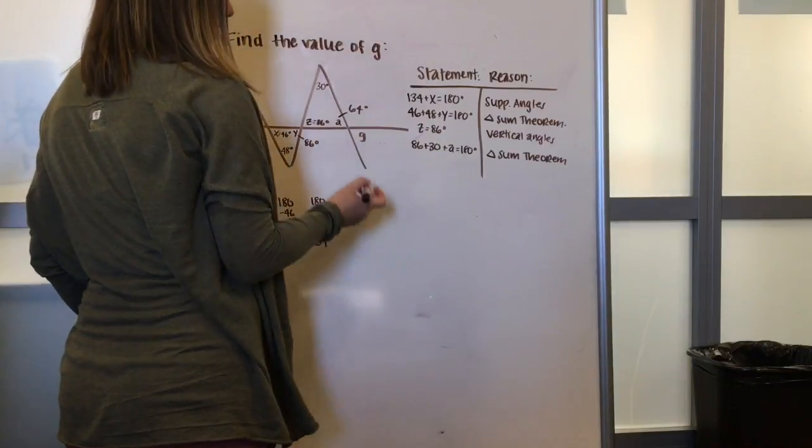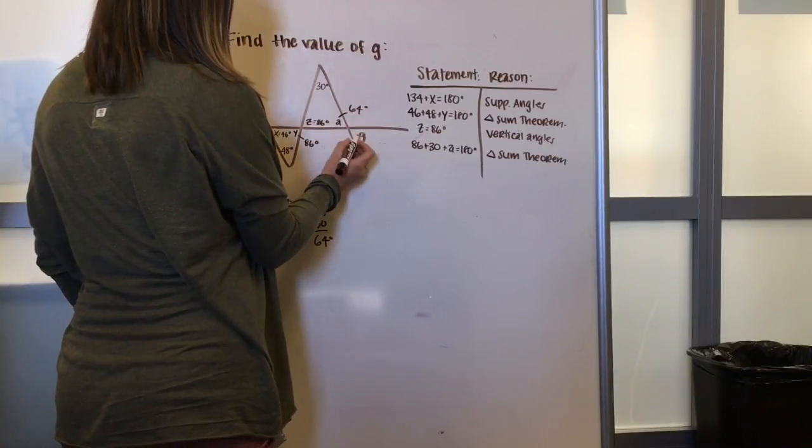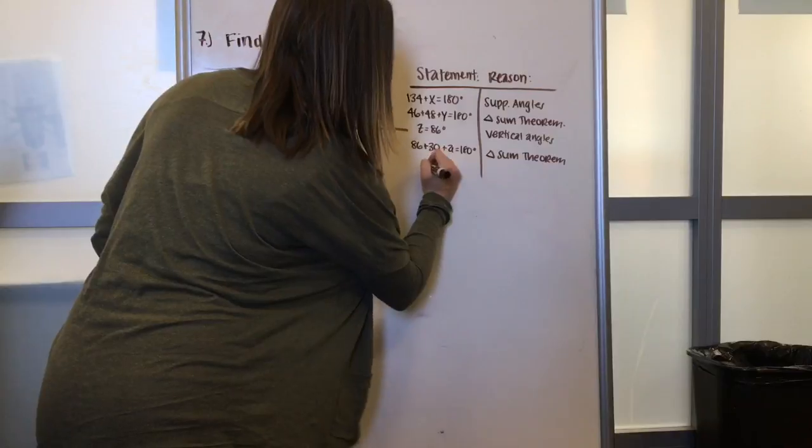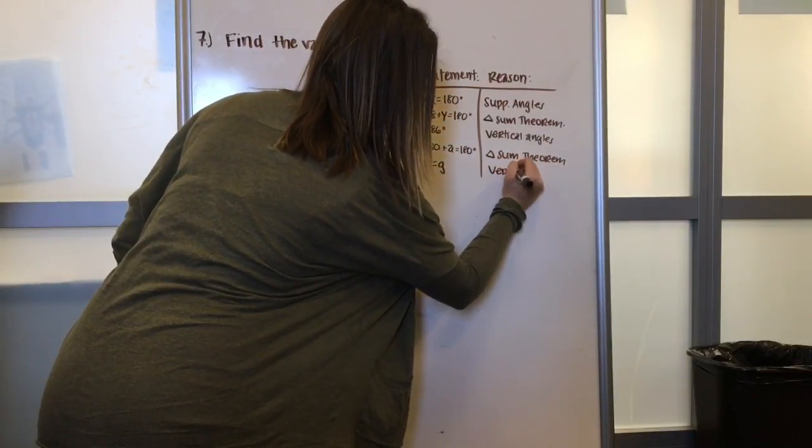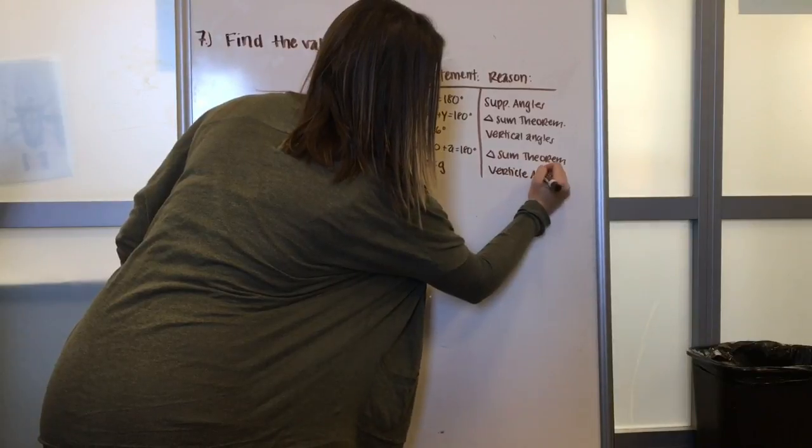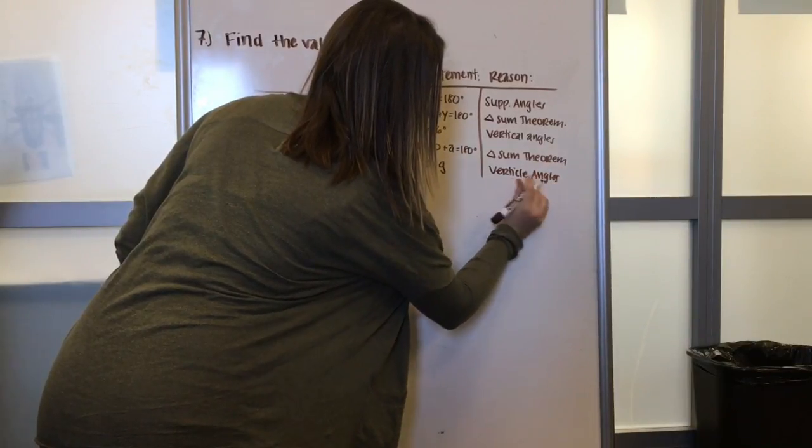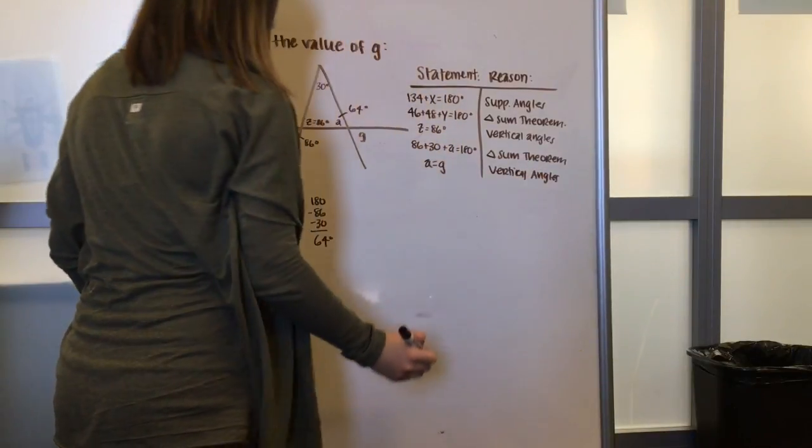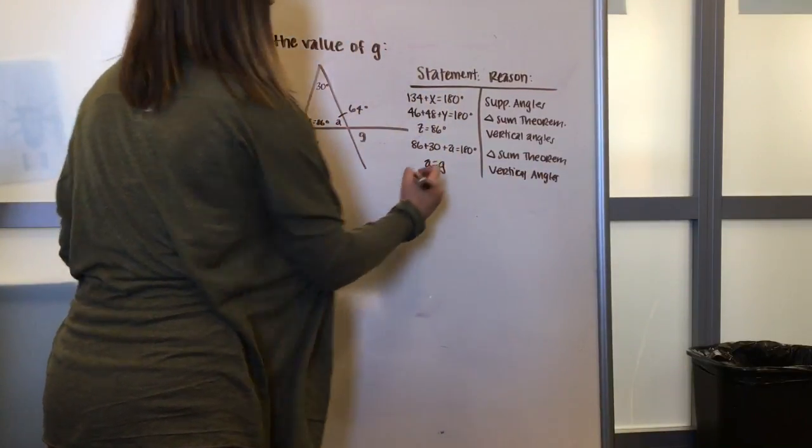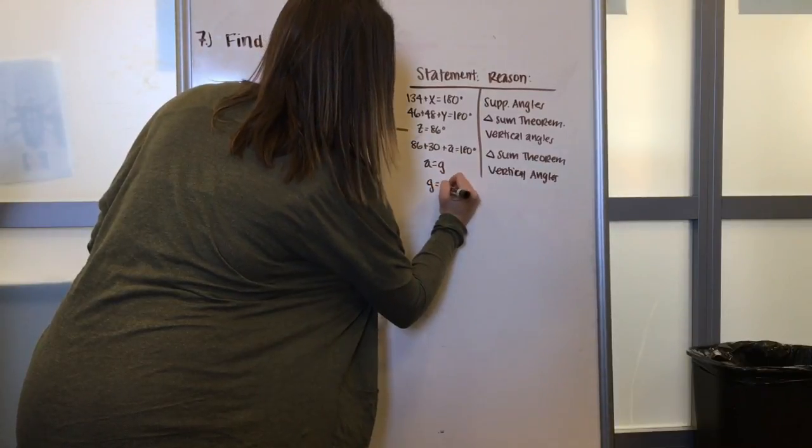And again, because of vertical angles, we know that a is equal to angle g. And because a is 64 degrees, g is 64 degrees.